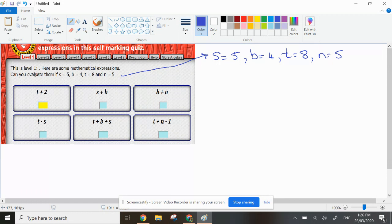Okay, so first of all, in the first one it says here, this is level 1. Here are some mathematical expressions, can you evaluate them, that means write a value for them, and it tells you that S is 5, B is 4, T is 8, and N is 5. I've just written them over here so you can see them much larger.